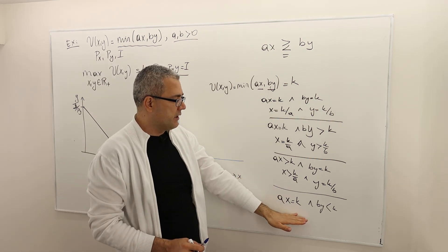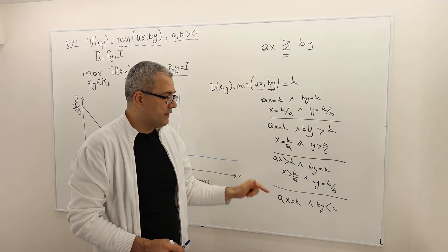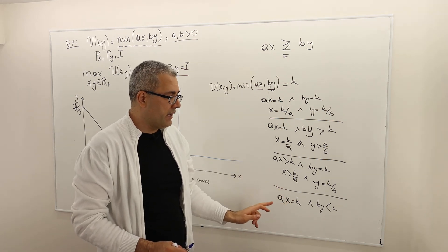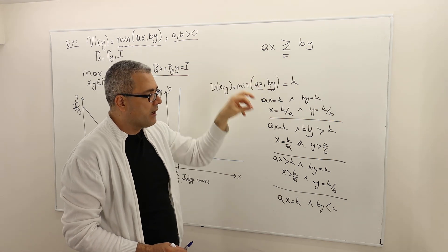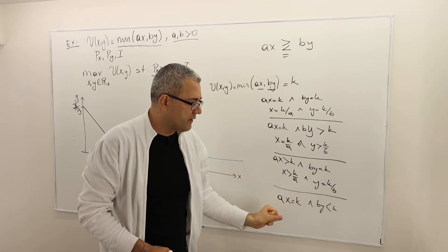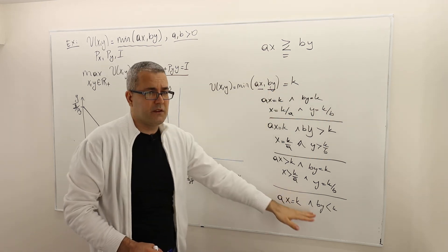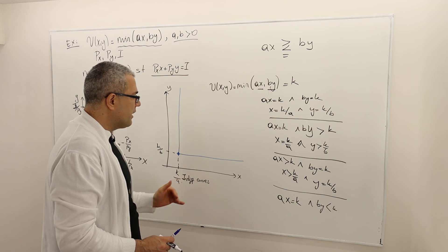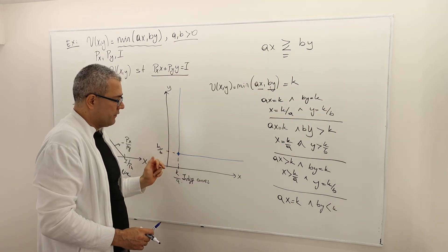But what I'm trying to say here is that if the second term is less than the first term and this first term is equal to K, so therefore this minimum is going to pick the BY guy, but this BY is less than K. So therefore my utility is not going to be K, it's going to be something less than K, whatever the value of BY is. So therefore those points are not going to be on my indifference curve.